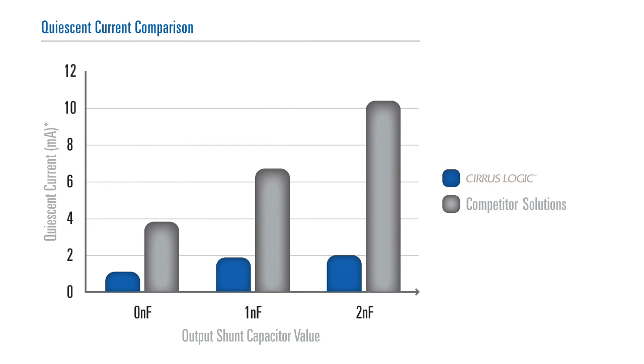The CS35L0X family has the industry's lowest quiescent current at 1 milliamp. When used with no external filter components, it is at least 40% lower than the closest competitor in the market today.